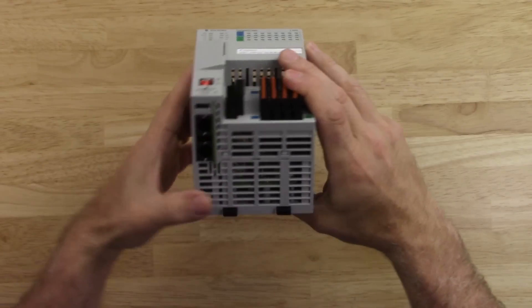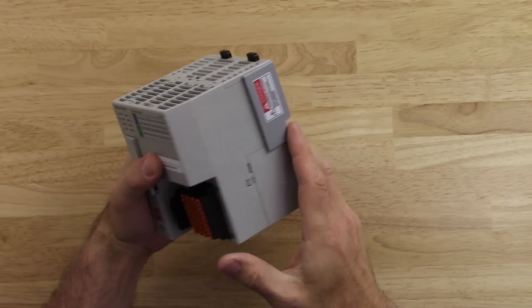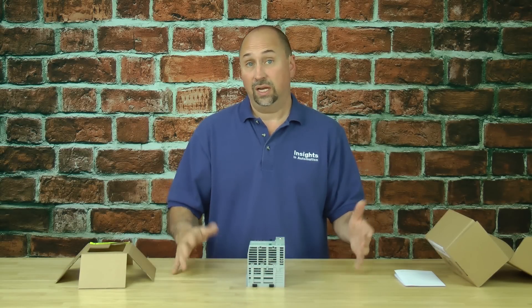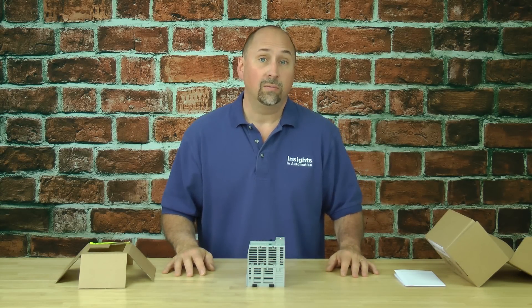Okay, and what else do we have? We've got the bottom. We've got the vents. Top, we've got vents. And that's it. That's what you get when you purchase a CompactLogix L1 processor.